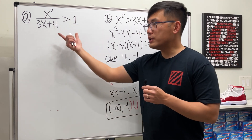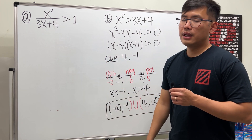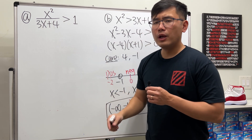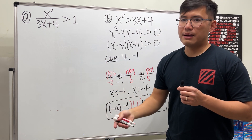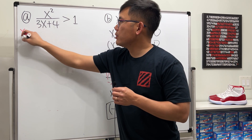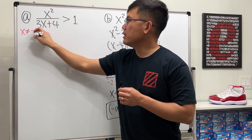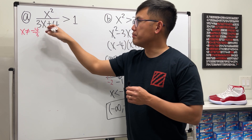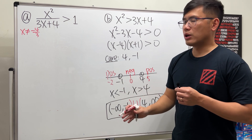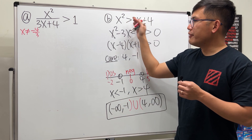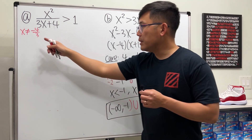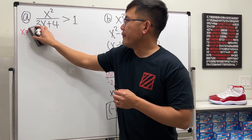Now for the rational inequality x² / (3x + 4) > 1 — the problem is having (3x + 4) in the denominator. There's an extra cut point: x cannot equal -4/3 because that makes the denominator zero. That's an additional trouble number compared to the previous problem.